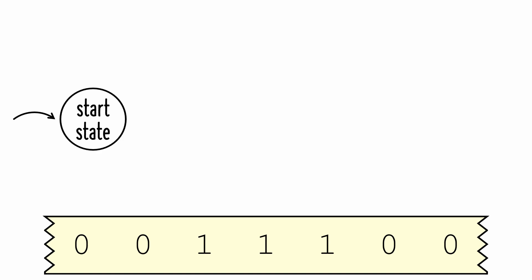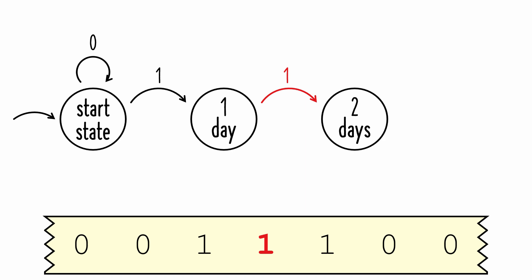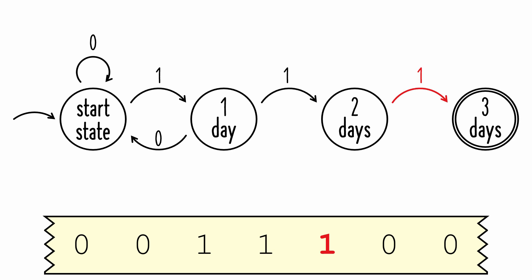A state diagram begins with a start state. If the first number in our input string is 0, we won't change state. Our second number is also 0, so our state remains the same. Our third number is a 1, so we transition to the second state, which indicates we had a 90-plus degree day. Our fourth number is 1, so we transition to the next state. But had it been 0, we would go back to the start state. Our fifth number is 1, so we transition to the next state, indicating we had three consecutive 90-plus degree days.